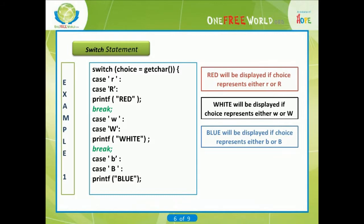The break statement causes control to be transferred out of the switch statement, thus preventing more than one group of statements from being executed. One of the labeled groups of statements within the switch statement may be labeled default. This group will be selected if none of the case labels matches the value of the expression. This is a convenient way to generate error messages or error correction routines. The default group may appear anywhere within the switch statement — it need not necessarily be placed at the end. If none of the case labels matches the value of the expression and the default group is not present, as in the above example, then no action will be taken by the switch statement.